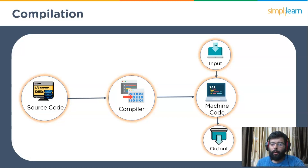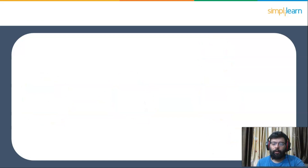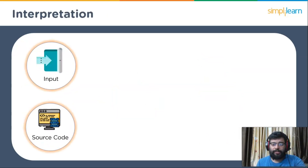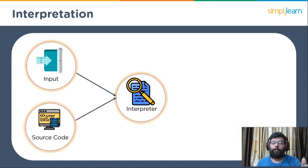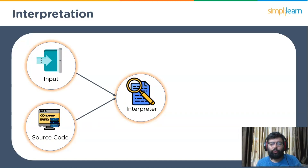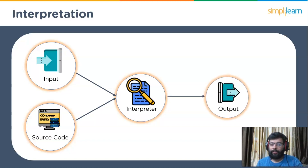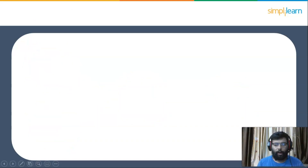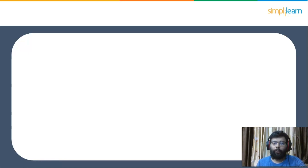Interpretation is the process that takes a single line of code at a time and executes it. The interpreter executes the instructions specified in the source code while the program is being executed. Now we will see both compilation and interpretation shown in one diagram.